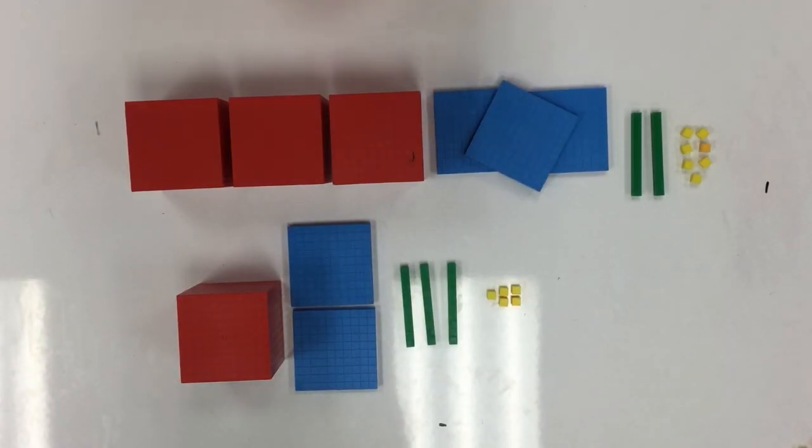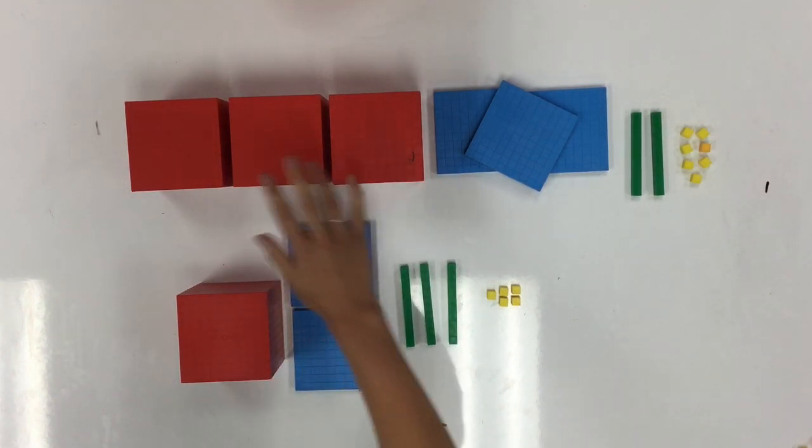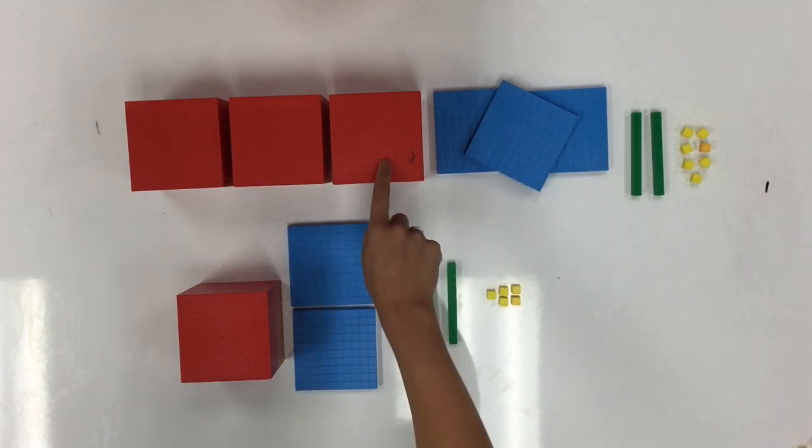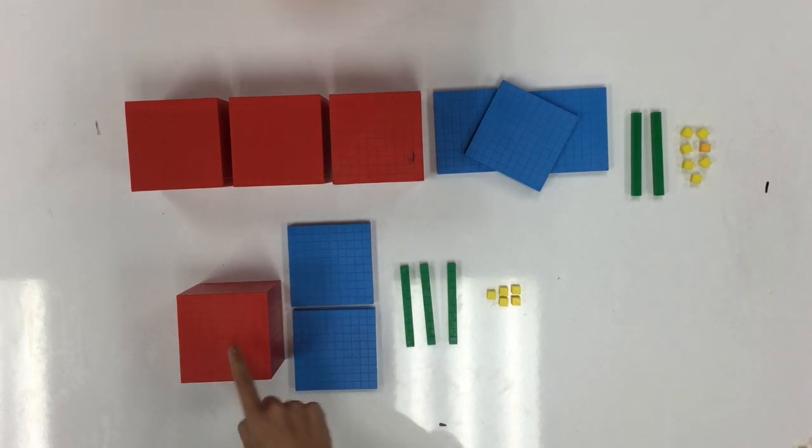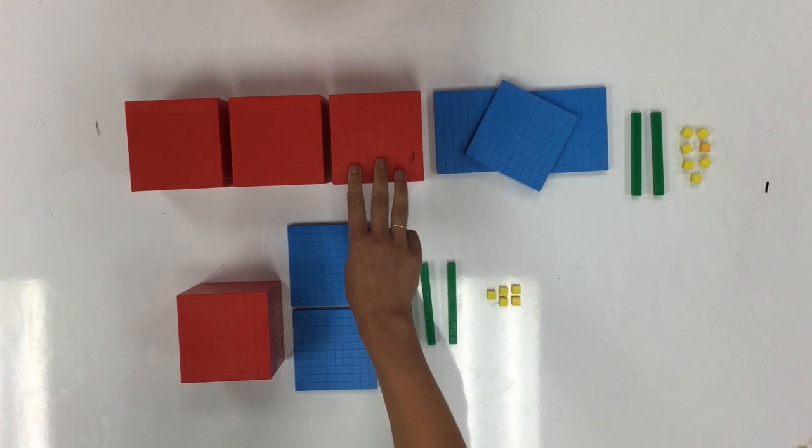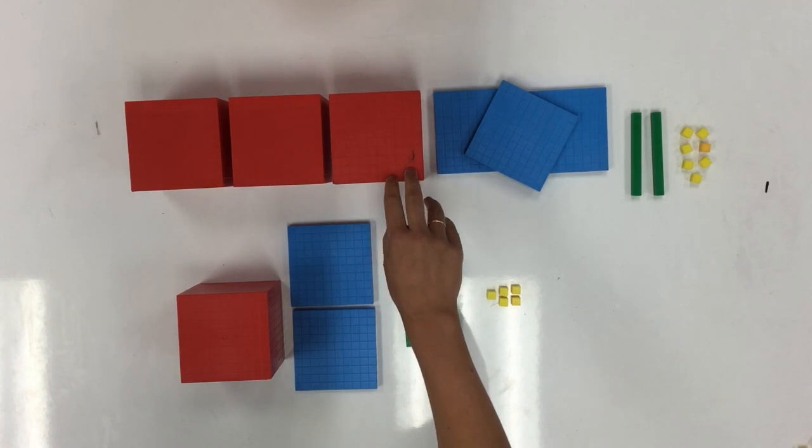When we're looking at comparing numbers, we always start in the thousands place. In my top number, 3,327, I have three thousands in the thousands place. Down below, I have 1,235. If I compare my 3,000 with 1,000, we know that 3,000 is the greater value. Therefore, this number has a larger value.